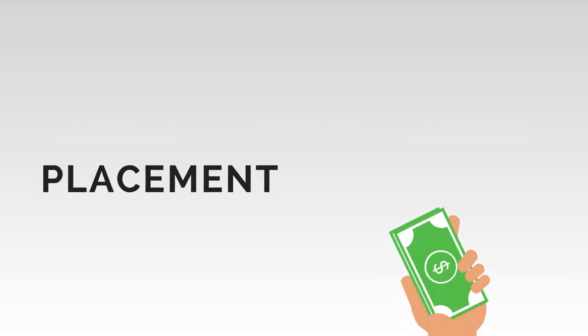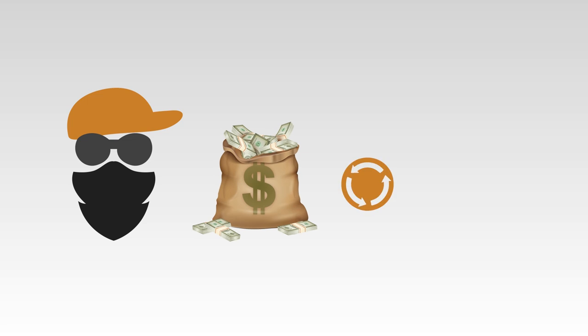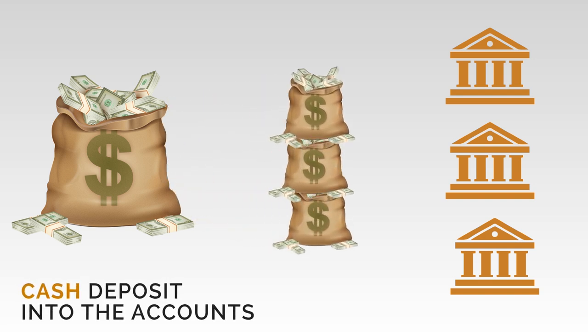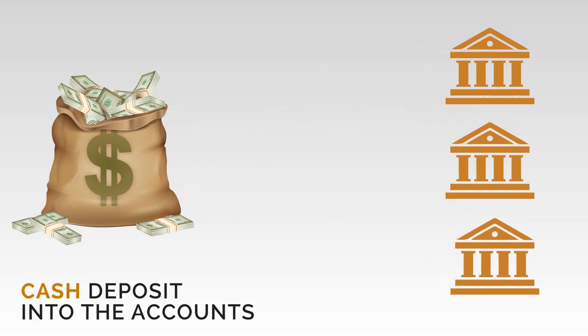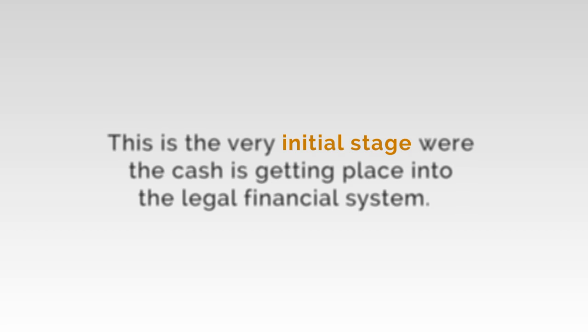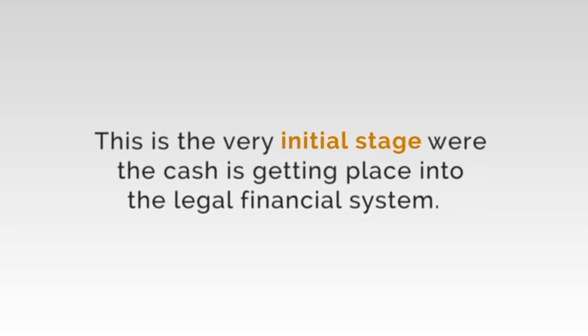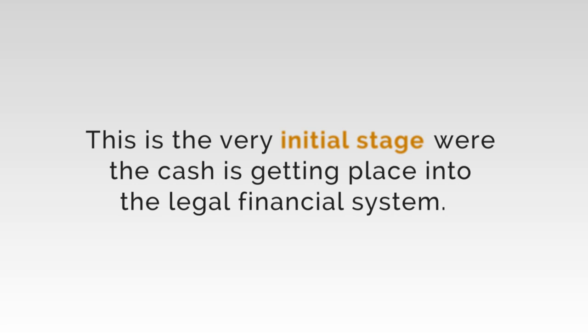Placement stage: The cash generated from criminal activities is converted into monetary instruments such as money orders or traveller's checks, or the cash is deposited into the accounts of financial institutions and banks. This is the very initial stage where the cash is placed into the legal financial system.